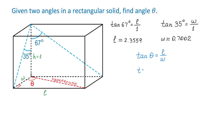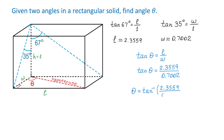Replacing the values, we have tangent of theta equals 2.3559 divided by 0.7002. To find angle theta, we take the inverse tangent of 2.3559 over 0.7002. Using a calculator, we get that theta is approximately 73.4 degrees. The problem is now completed — I hope you enjoyed this problem and I look forward to reading your comments.